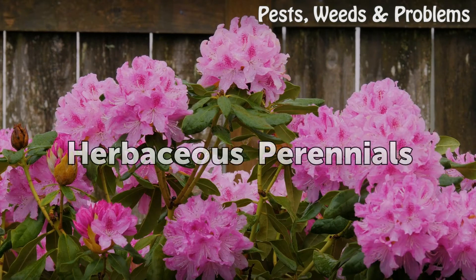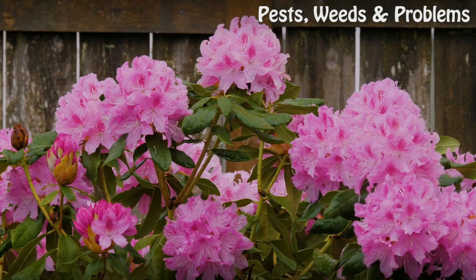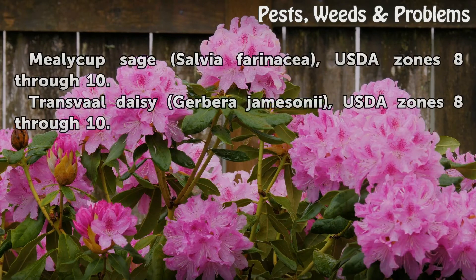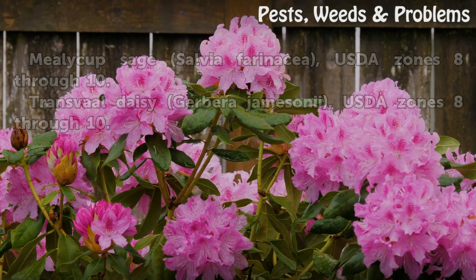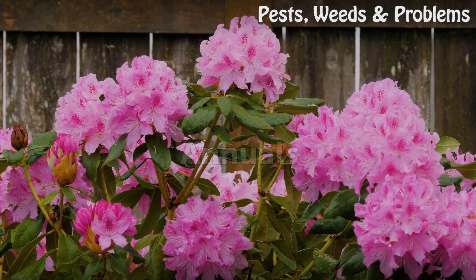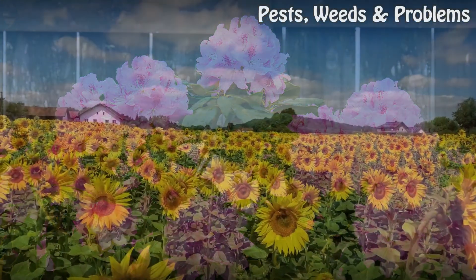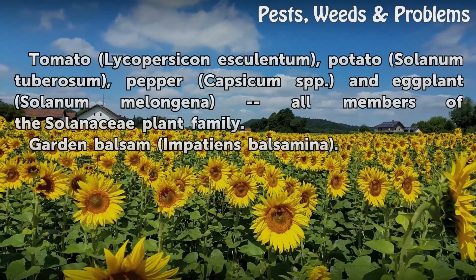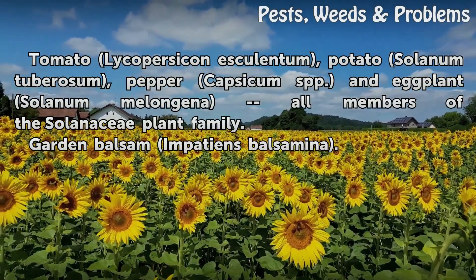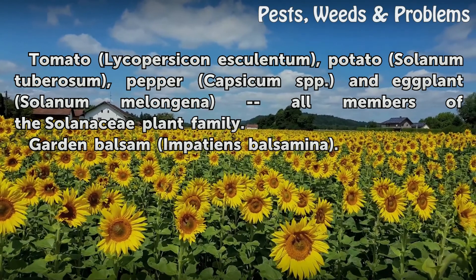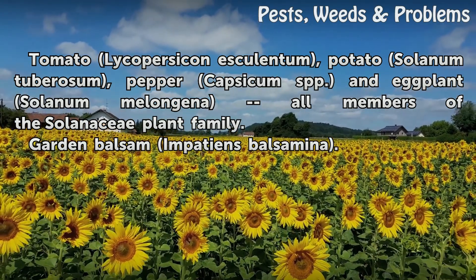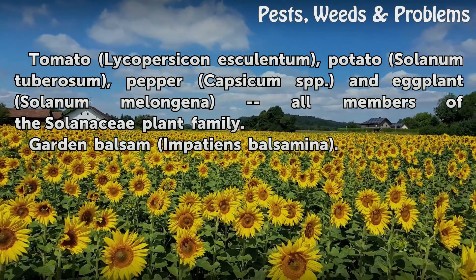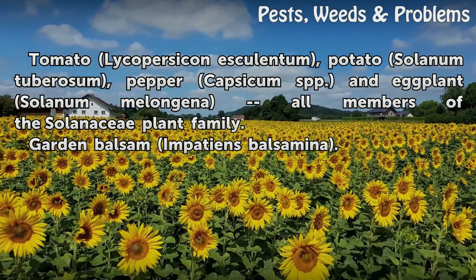Herbaceous perennials: Mealy cup sage (Salvia farinacea), USDA zones 8 through 10. Transvaal daisy (Gerbera jamesonii), USDA zones 8 through 10. Annuals: Tomato (Lycopersicon esculentum), potato (Solanum tuberosum), pepper (Capsicum spp.), and eggplant (Solanum melongena) — all members of the Solanaceae plant family. Garden balsam (Impatiens balsamina).